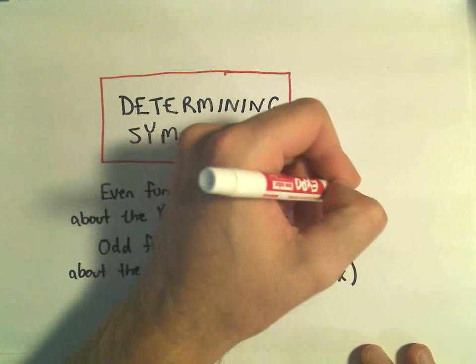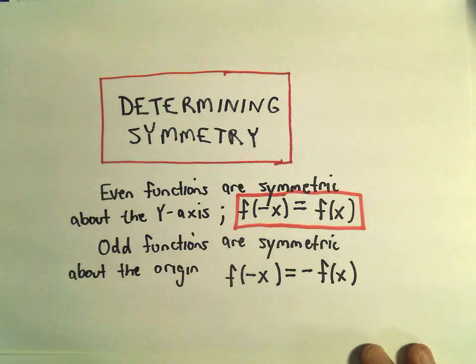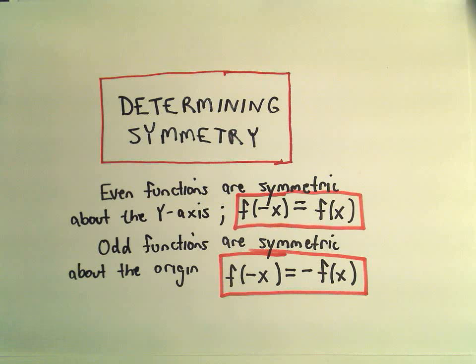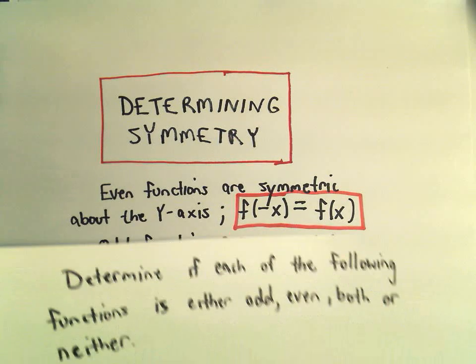So if f of negative x equals f of x, we say it's symmetric about the y-axis or it's an even function. If f of negative x equals the negative of f of x, we say it's an odd function and it's symmetric about the origin.